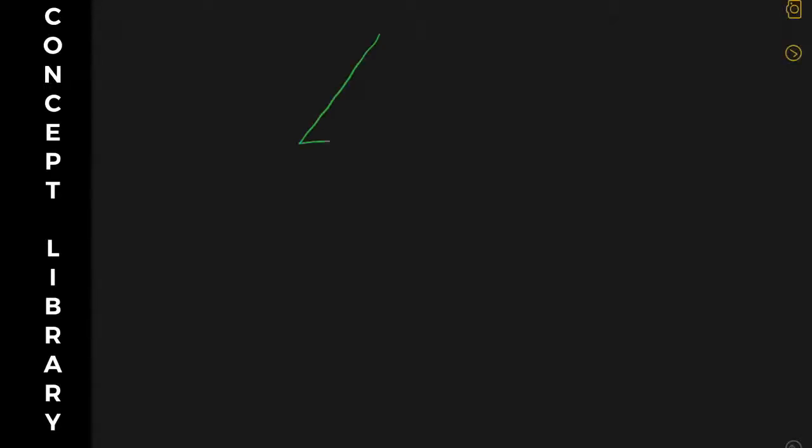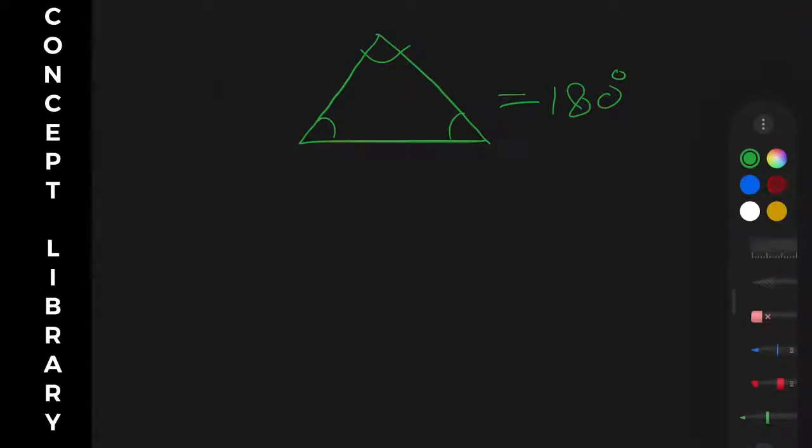As you know, in any triangle, all three angles add up to 180 degrees. Let's name these angles: this is angle A, this is angle B, and this is angle C.